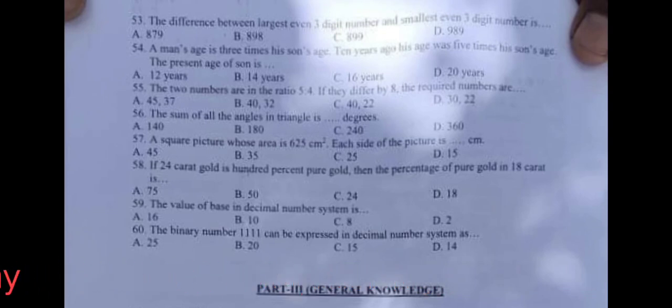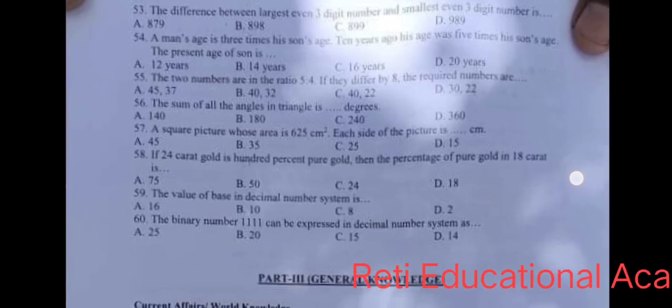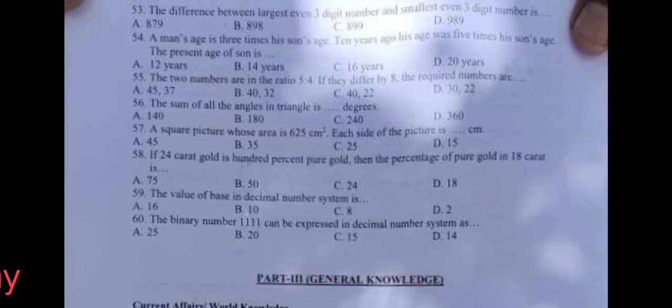Question number 55: The two numbers are in the ratio 5 ratio 4. If they differ by 8, the required numbers are, and the correct answer is B, 40 and 32.